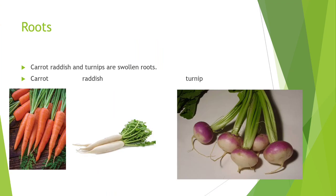In the roots, we have carrot, radish, and turnip. Carrots are a favorite of rabbits. Radish and turnip are also root vegetables. These are all three roots.